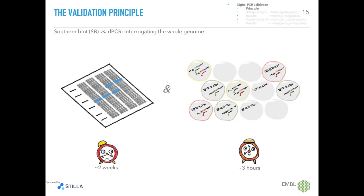Our first aim was to validate the quantitative power of digital PCR to predict the CRISPR outcome using reference genomes previously validated by Southern blot. Southern blot interrogates the whole genome, as does digital PCR, but it is very laborious, labor-intensive, time-consuming, and requires large amounts of cells to extract sufficient genomic DNA. Digital PCR, on the contrary, performs in a short time with low amounts of genomic DNA and potentially with high throughput, and provides absolute numbers of integrated tags. Nevertheless, Southern blot was used in our validation pipeline to identify the reference genomes to be scored with digital PCR for tag copy number assessment.